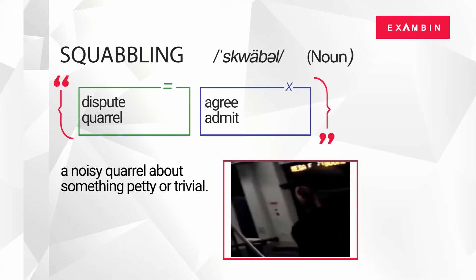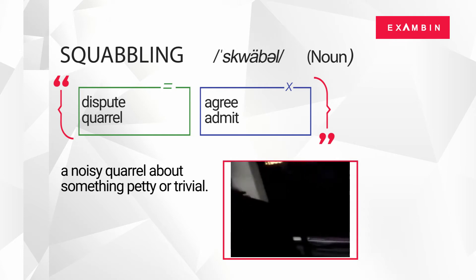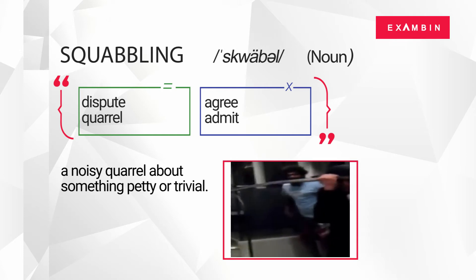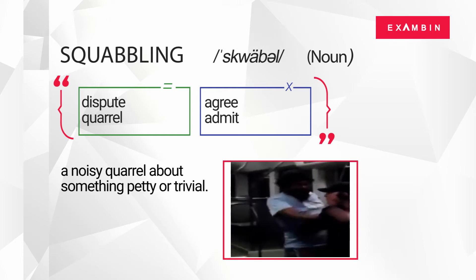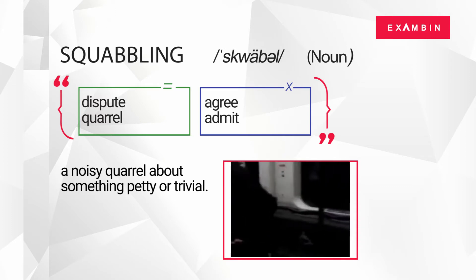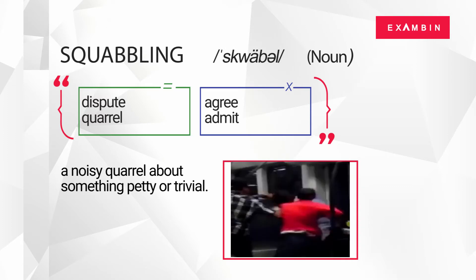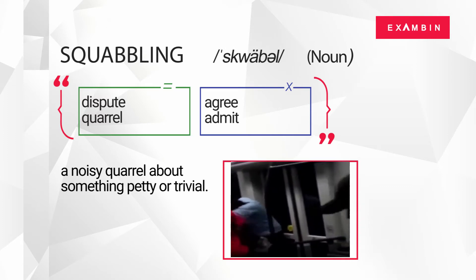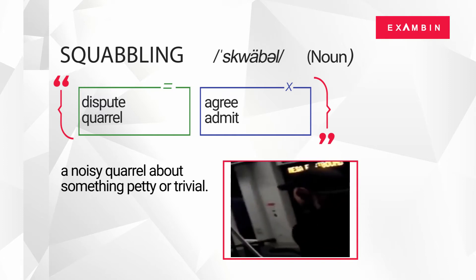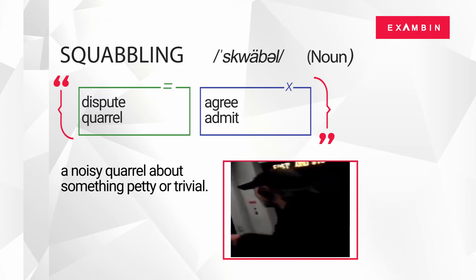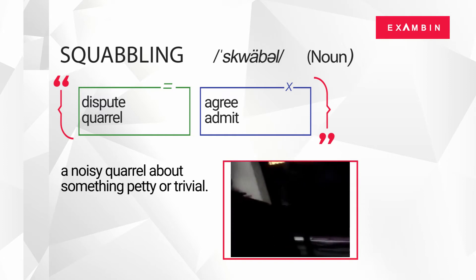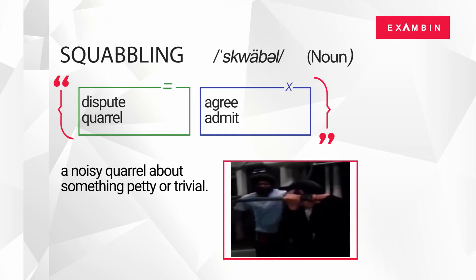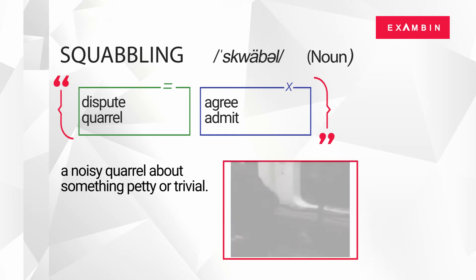The second word of the day is squabbling. The word squabbling is a noun. The direct synonyms of squabbling are dispute and quarrel. In general context, the word squabbling means a noisy quarrel about something petty or trivial. Agree and admit are some of the terms referring to the opposite meaning of the word squabbling.